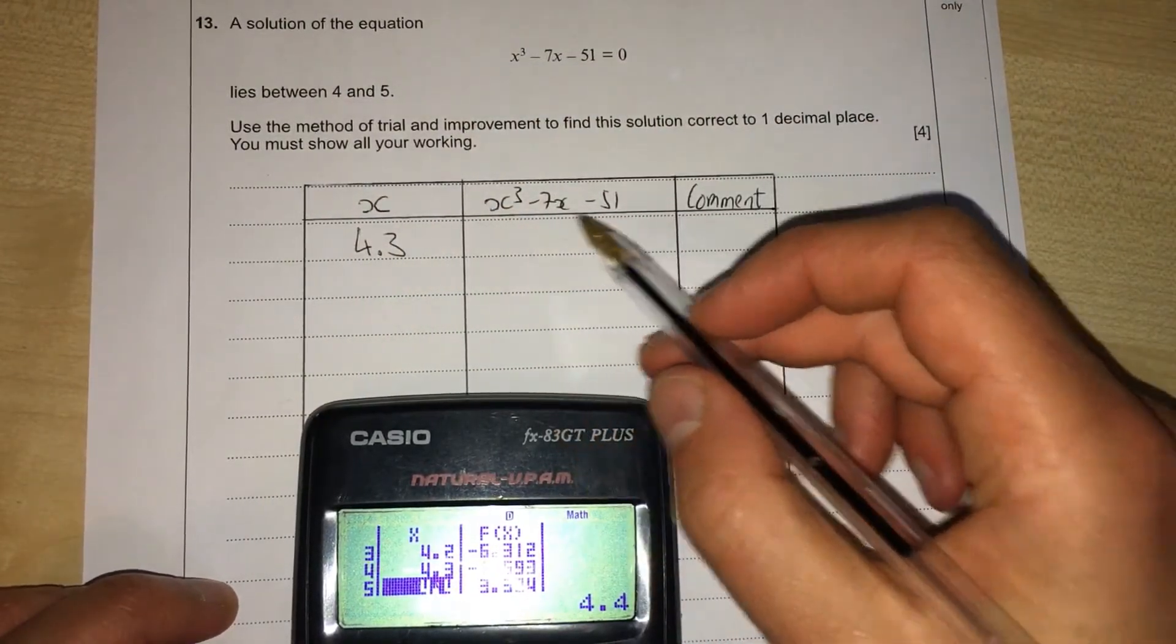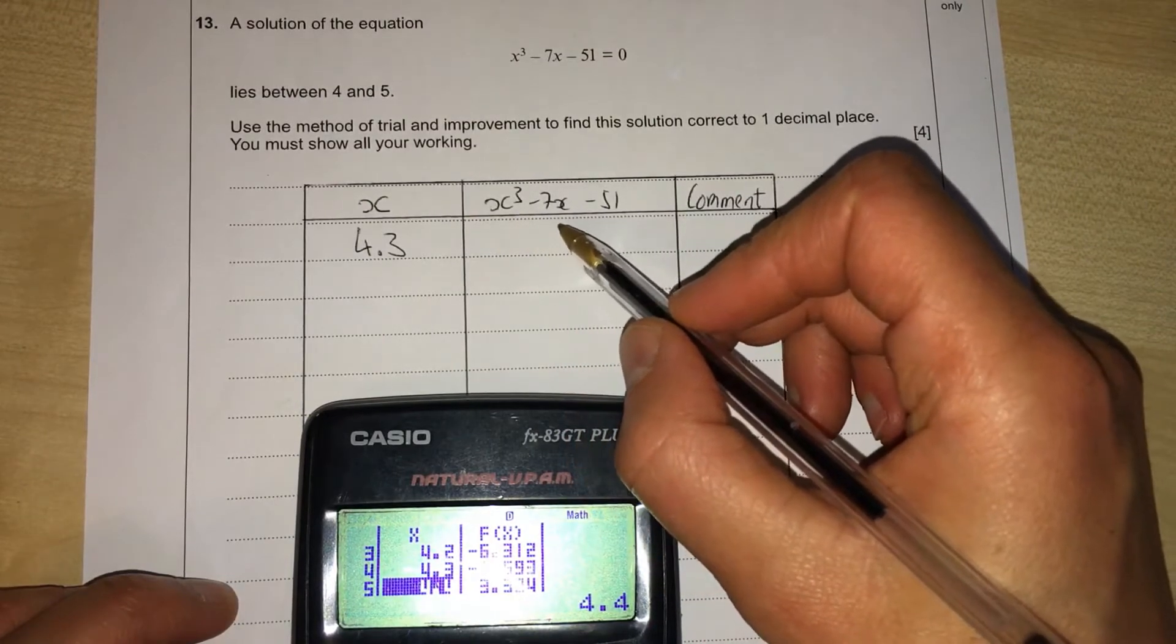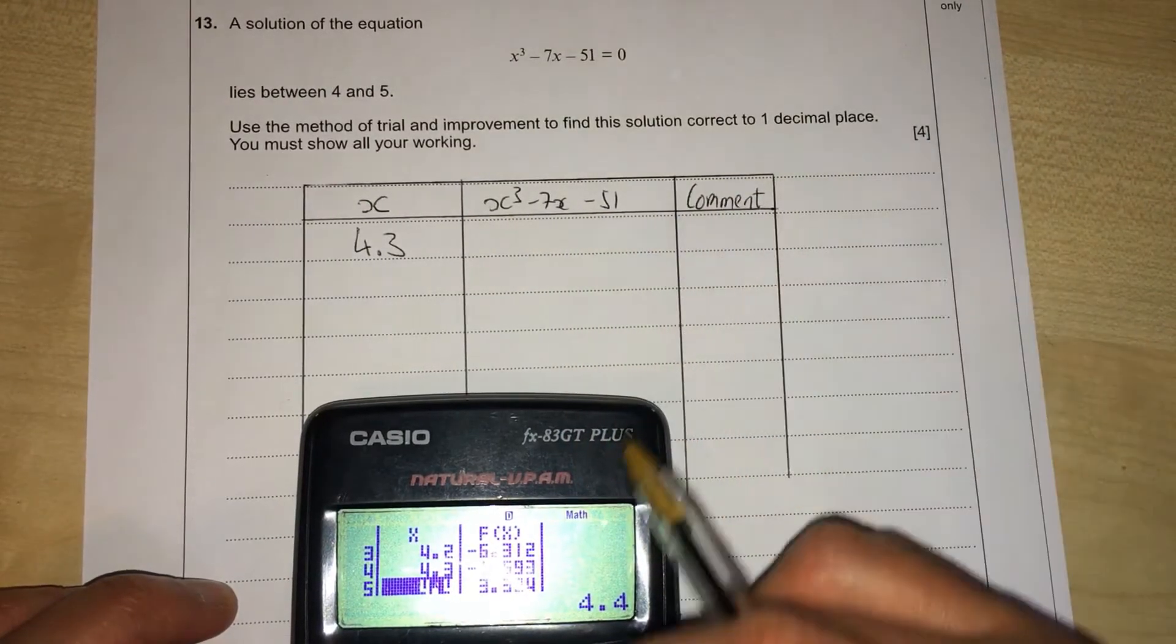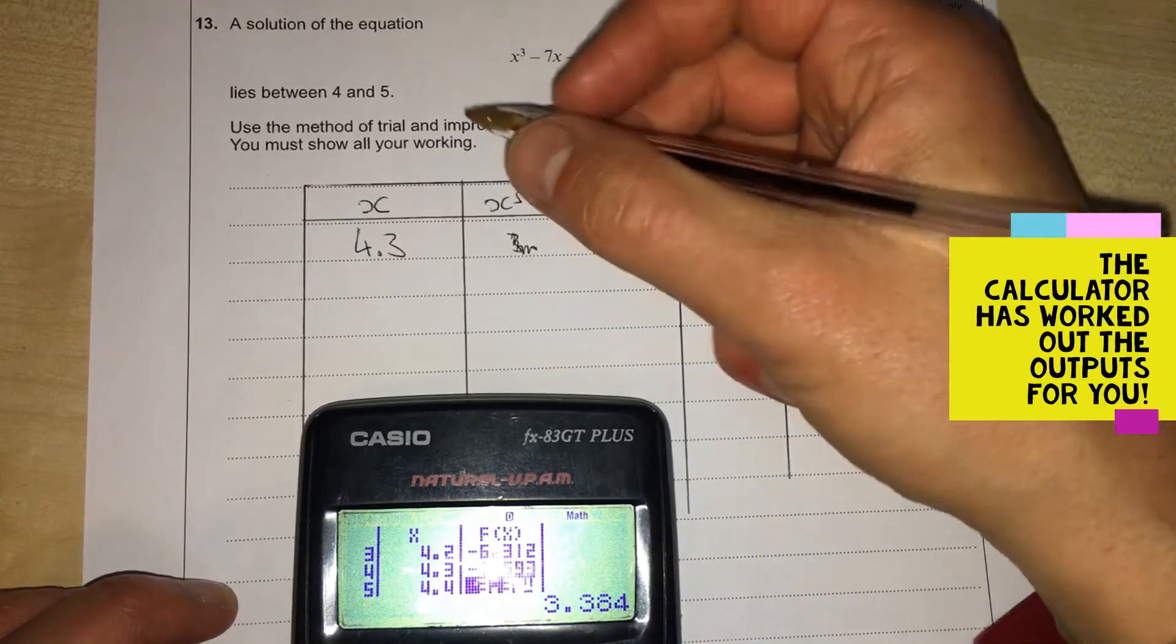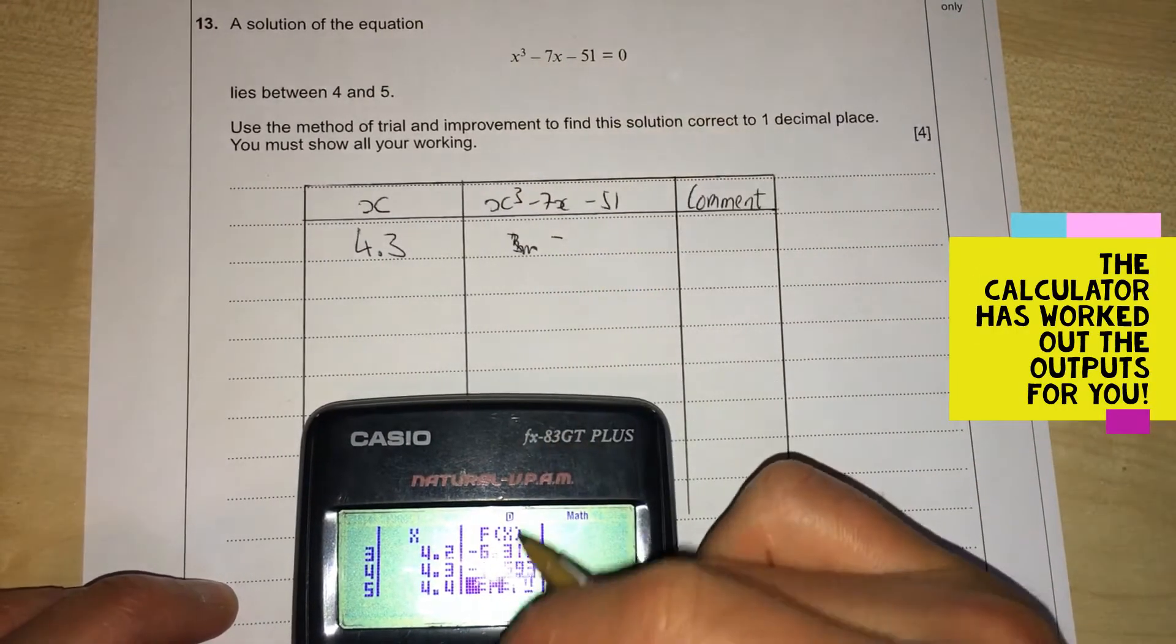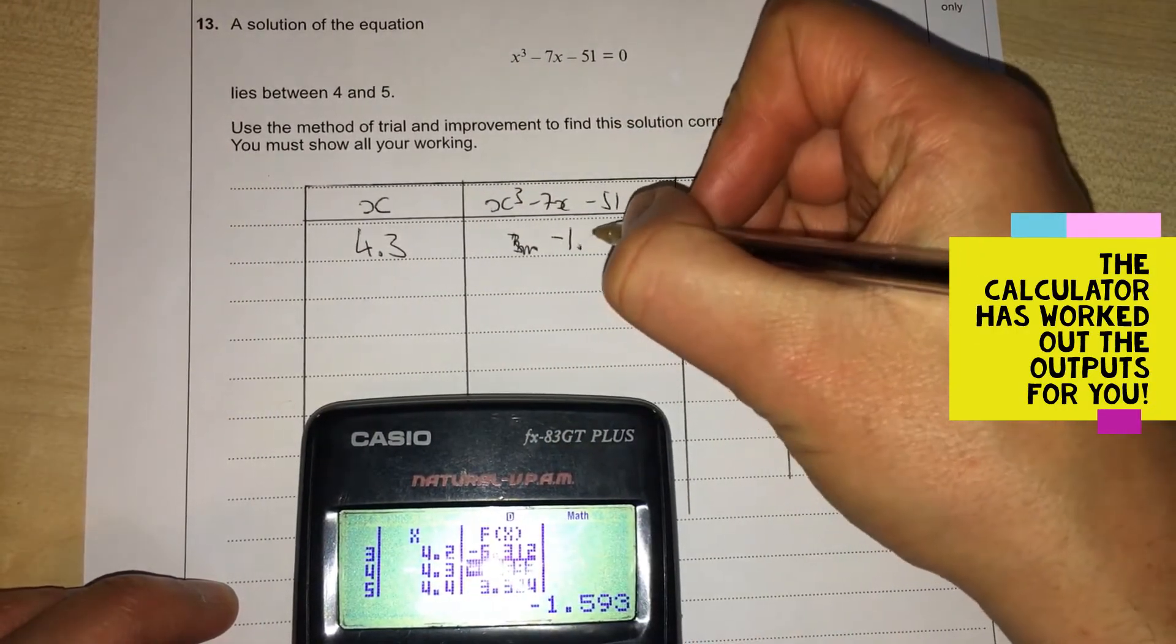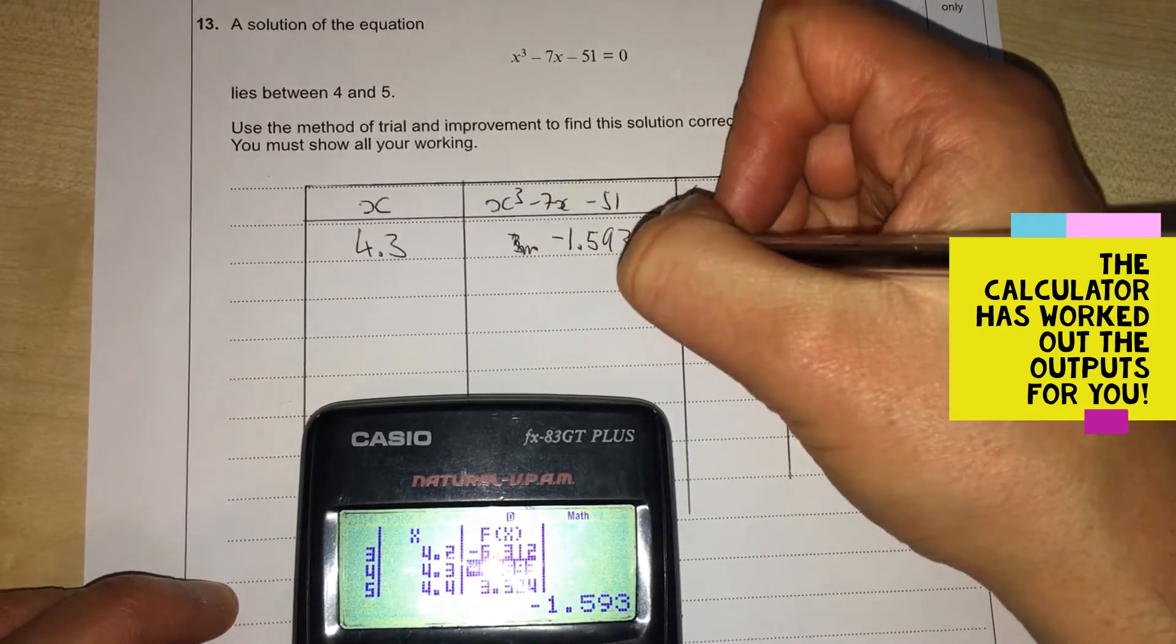We get 4.3³ - 7 × 4.3 - 51, and it equals -1.593.